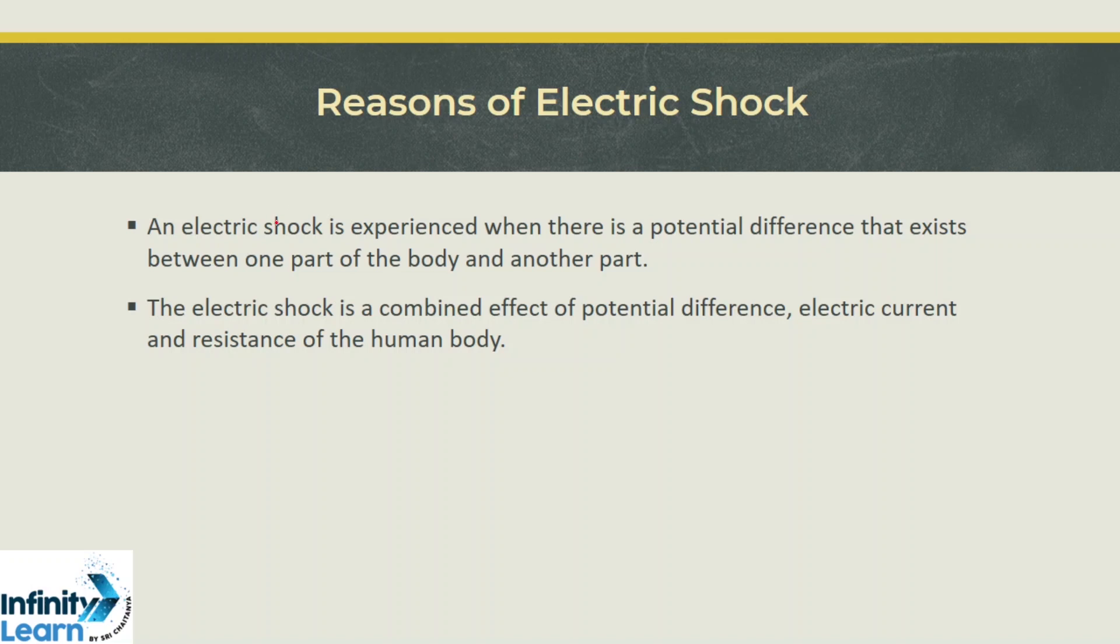So what we have understood is electric shock is experienced whenever there is a potential difference that exists between one part of the body and another part. This electric shock is a combined effect of potential difference, electric current, and resistance of the human body. The electric shock depends on the amount of current that flows and the resistance of the body. If the current keeps on flowing continuously, the tissues of the body get damaged and the resistance decreases further and current goes on increasing. Therefore we can write current is inversely proportional to resistance.